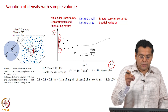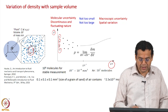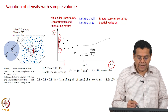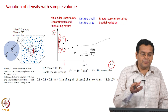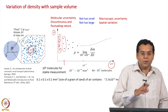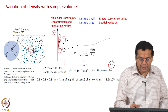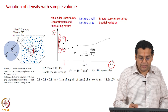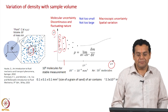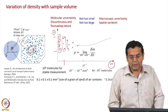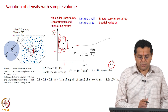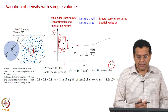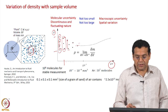As you slowly increase the measurement volume to include a few hundred molecules, the density fluctuation becomes slightly smaller. The number of molecules on average may vary from 90 to 110 instead of 1 to 10, so the variation in density is less. If you keep increasing the volume, the fluctuations in density decrease further, and at some optimal volume the density becomes stable without any fluctuation.